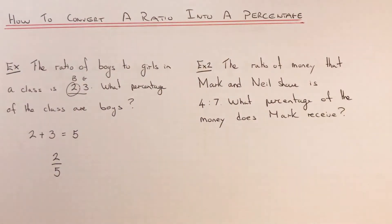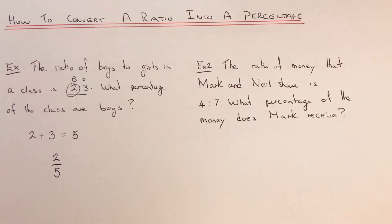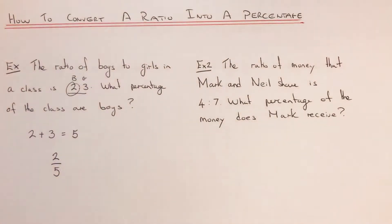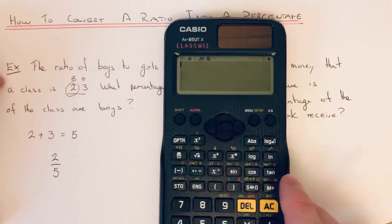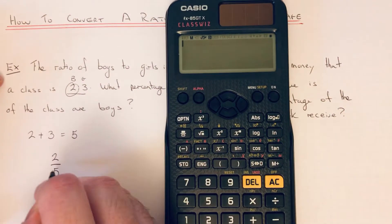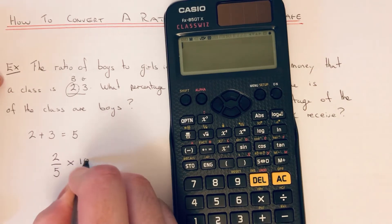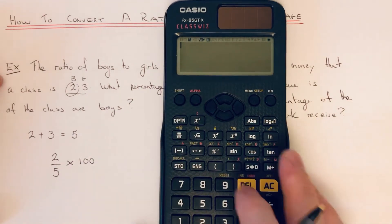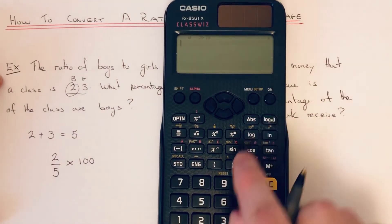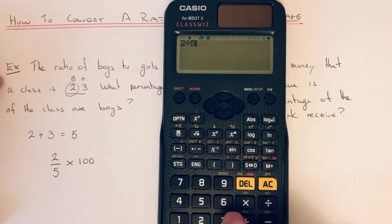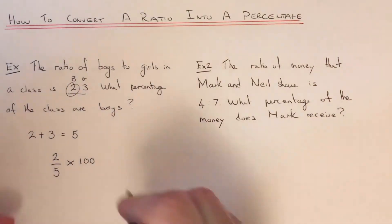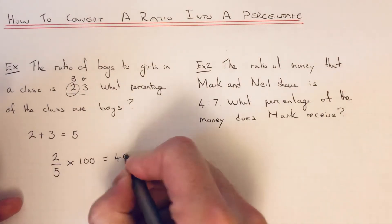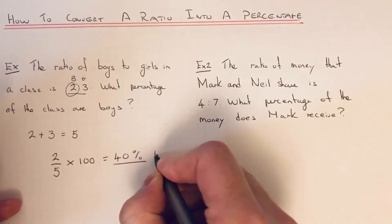Now we need to convert this into a percentage. The easiest way to do it if you've got your calculator is just to do 2 divided by 5 and then times the answer by 100. So if we go 2 divided by 5 times 100, that gives us 40%. So 40% of the class are boys.